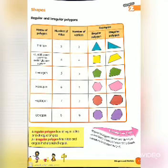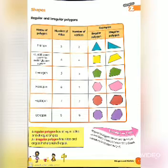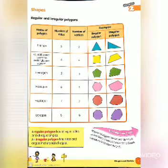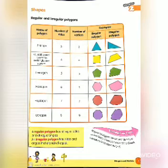Same for the quadrilateral — examples are rectangle and square. A quadrilateral has four sides and four vertices, but the shapes are different. Similarly, a pentagon has five sides, a hexagon has six sides, a heptagon has seven sides, and an octagon has eight sides.